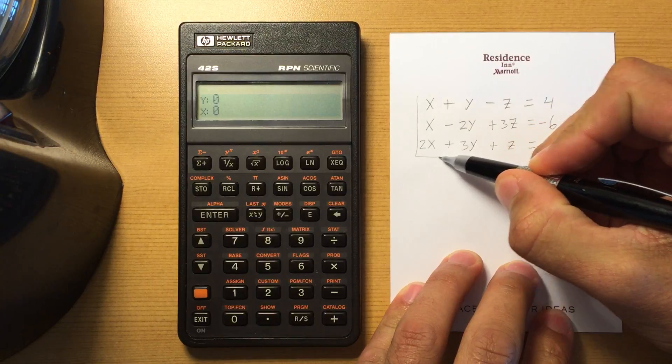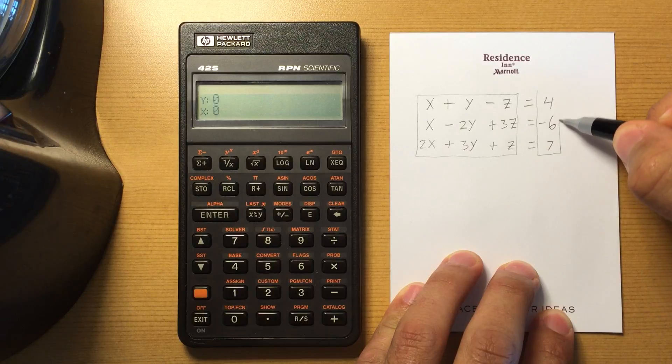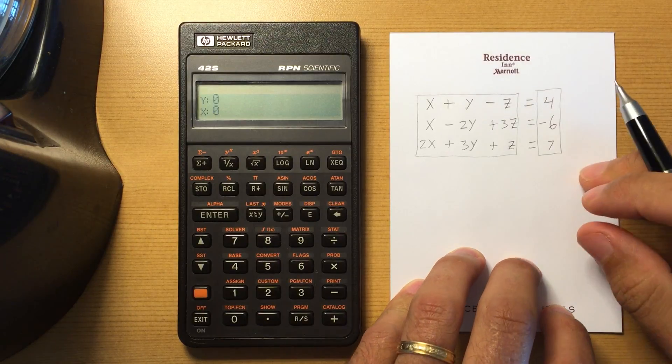So we're going to be entering a 3 by 3 matrix here and then a 3 by 1 matrix over here.